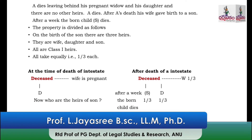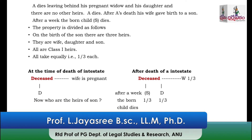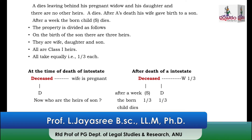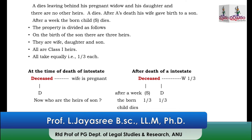The mother falls in Class 1 heir and the sister falls in Class 2 heir. So when there is a Class 1 heir, Class 2 is not entitled to take any property. So the son's one third of the property shall devolve on the mother, and the sister will get nothing.